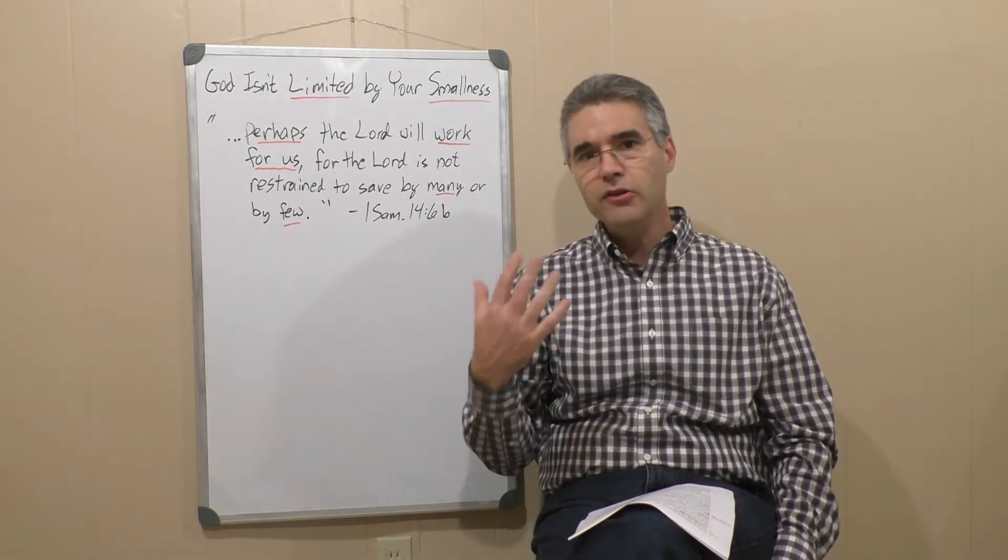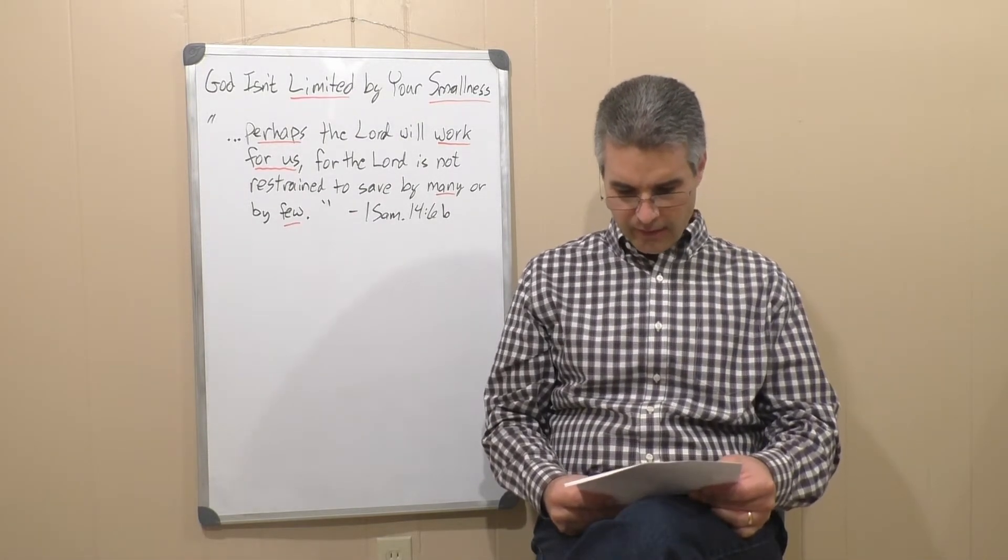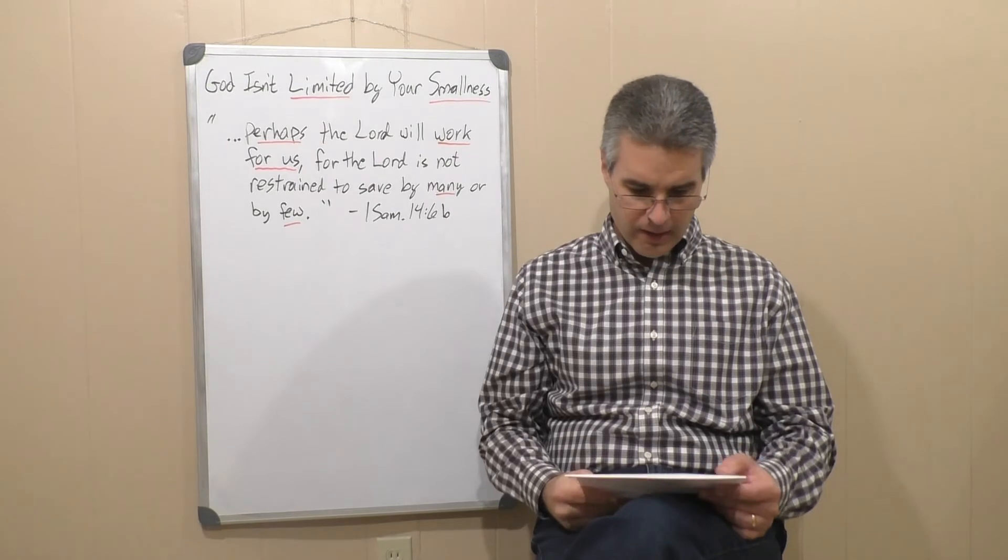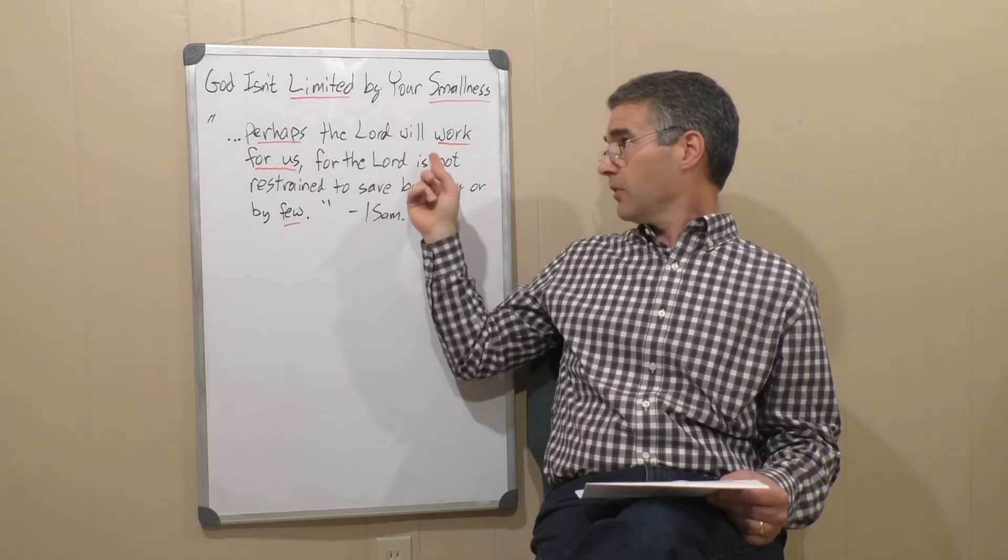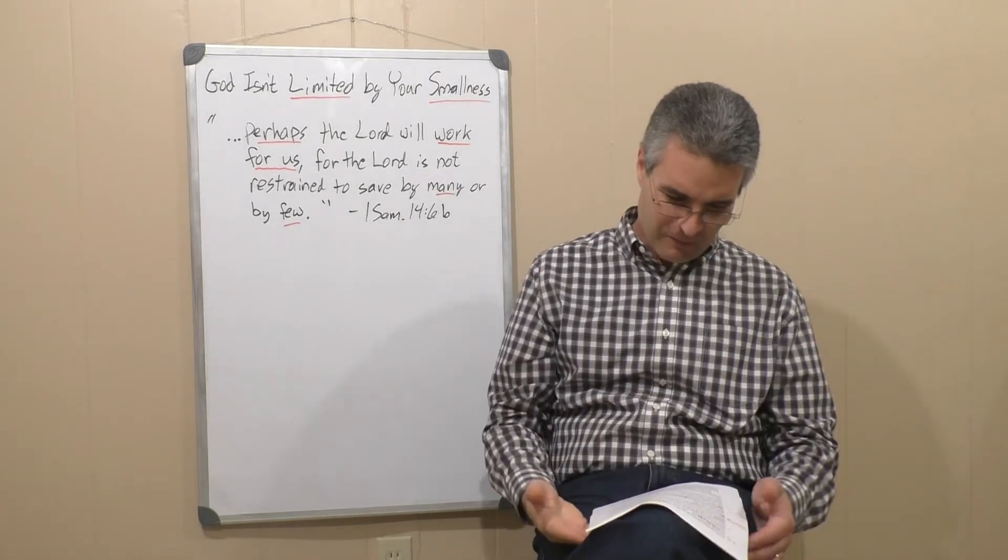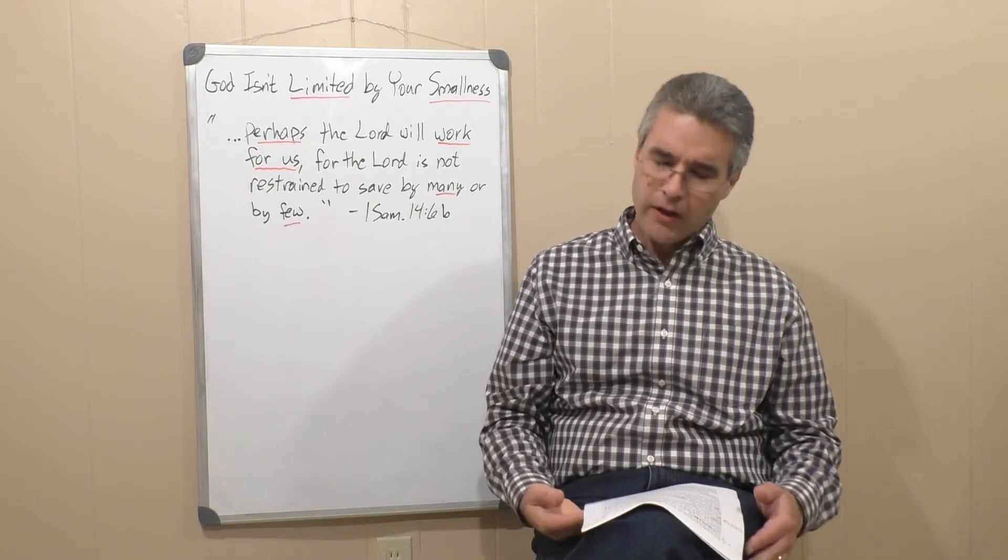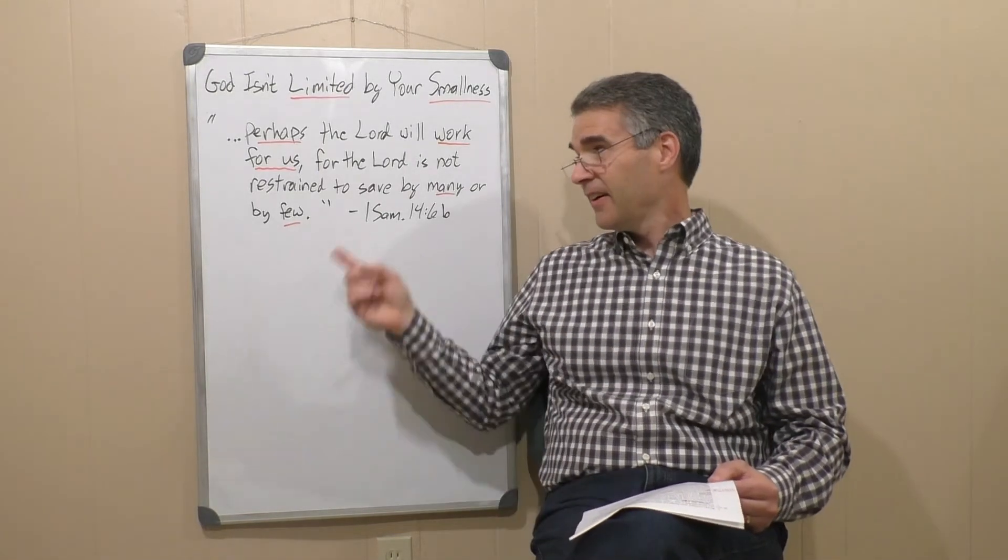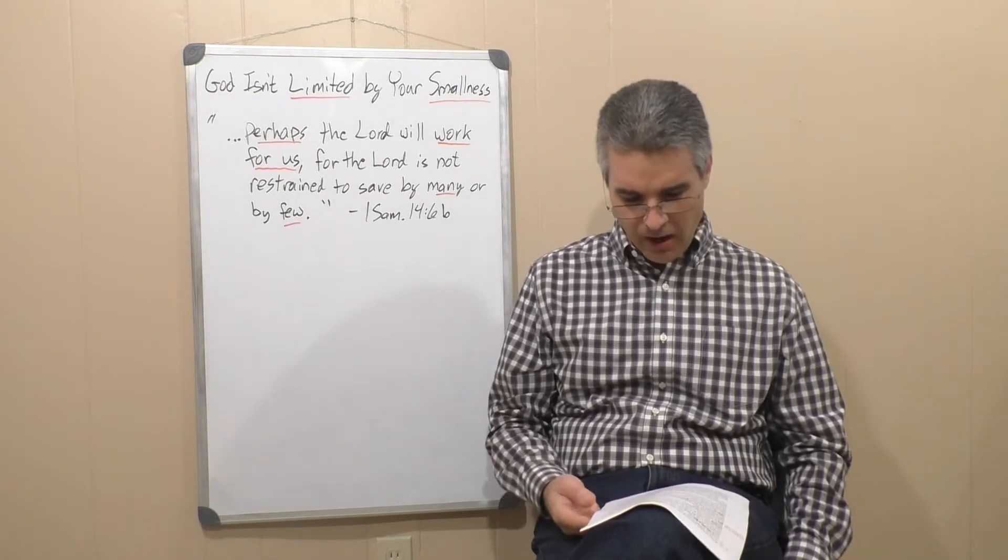And it turns into this big day of victory. And at the end of the day, the Israelites declare this. They say, Jonathan has worked with God this day. That's down in verse 45. Jonathan has worked with God this day. And very similar to what he says up here in verse 6. Perhaps the Lord will work for us. The Lord did work with him. It worked for him that day. See, when you're working with God, it doesn't matter if you're many or if you're few. It doesn't matter. Even if you're just two guys, it doesn't matter.